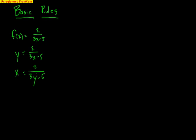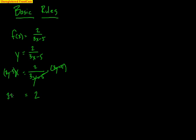I don't really like this fraction, so I'm going to multiply both sides by (3y minus 5). That's going to wipe the fraction out on that right side at least, leaving behind a 2. But over here I have to multiply by the (3y minus 5) as well, so that's going to give me 3xy minus 5x.